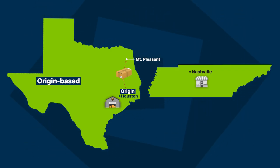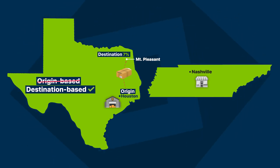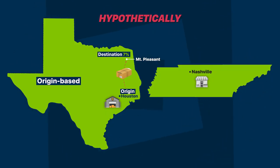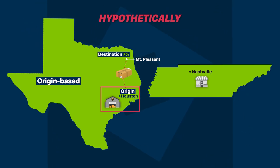What if hypothetically Texas was origin based for remote sellers, just like it is for in-state sellers? Then you would collect tax at the rate of Houston, Texas, because that is the location from which the product is shipped. Now, imagine having to figure that all out — not just for 45 states, but all 11,000 sales tax jurisdictions in the entire US. Good news: you don't have to know every single sales tax rate. I will show you exactly how to conquer this beast, and show you how to keep it simple and scalable so you can focus on growing your business and not lose sleep wondering if you paid the correct sales tax.